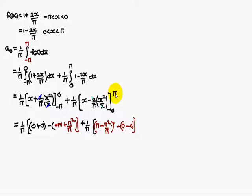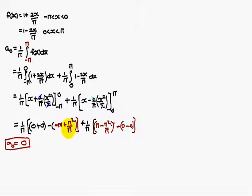Substituting the upper limit pi: pi minus pi squared by pi minus 0. Simplifying: pi squared by pi means plus pi, plus pi minus pi equals 0. Here also pi squared by pi means minus pi, and pi minus pi equals 0. Therefore, a₀ value is 0.